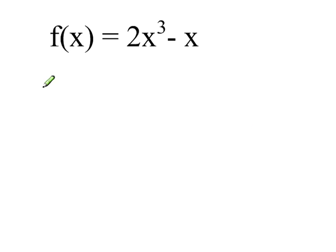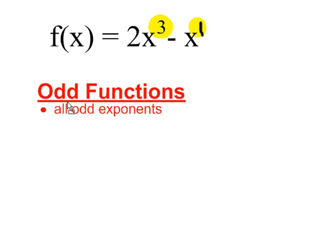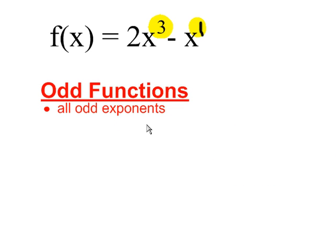In our next example, f(x) = 2x^3 - x. You'll notice that the exponent 3 is odd. Now the second term, the negative x, doesn't appear to have an exponent, but x^1 is also equal to x, and 1 is odd. Since both exponents are odd, this is an odd function, because odd functions have all odd exponents.